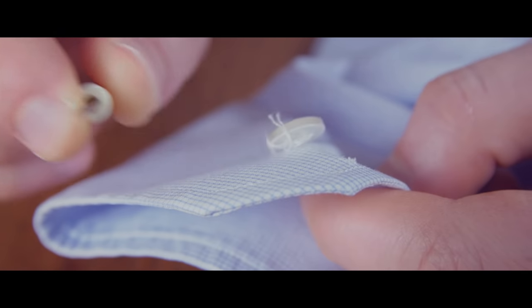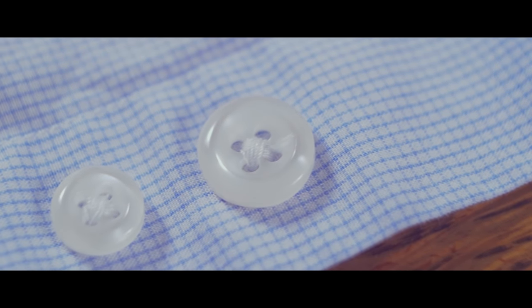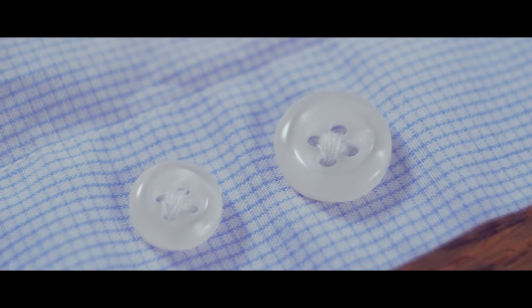Now, if the button has fallen off or you've lost it, there should be an extra button or two sewn in on the bottom of the shirt placket on the inside that you can use.